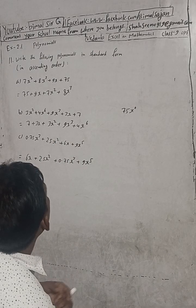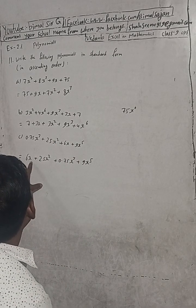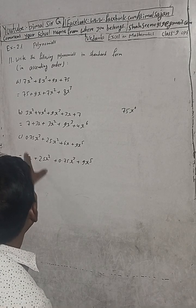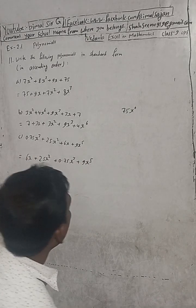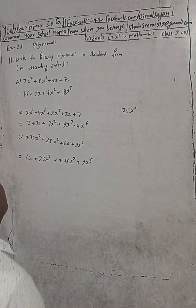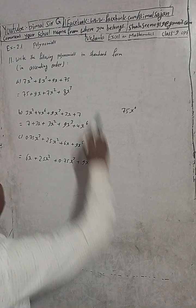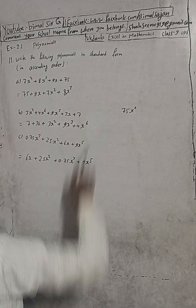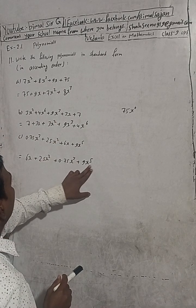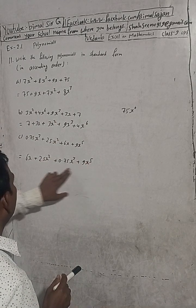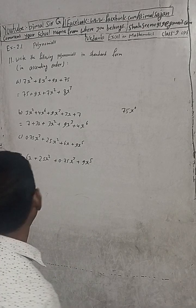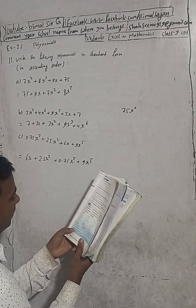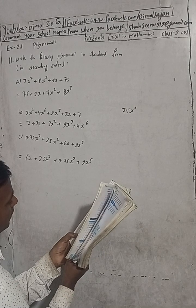This is ascending order with powers 1, 2, 3, 4, and 5. This is increasing order. This is the standard form in ascending form with the highest power. This is the answer in standard form.